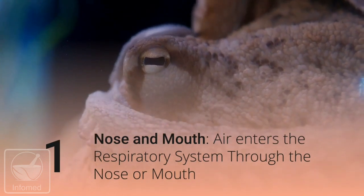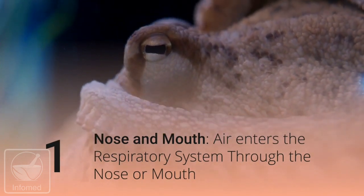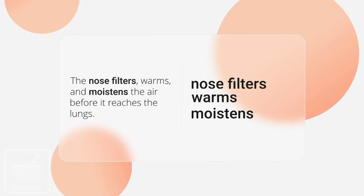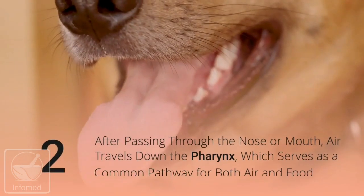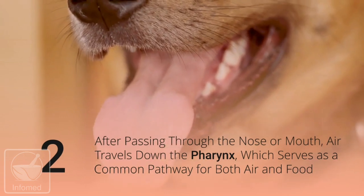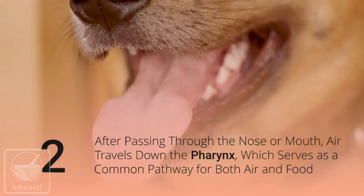Number one: nose and mouth. Air enters the respiratory system through the nose or mouth. The nose filters, warms, and moistens the air before it reaches the lungs. After passing through the nose or mouth, air travels down the pharynx, which serves as a common pathway for both air and food.